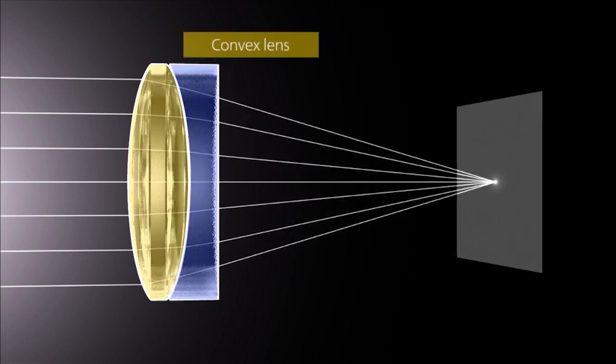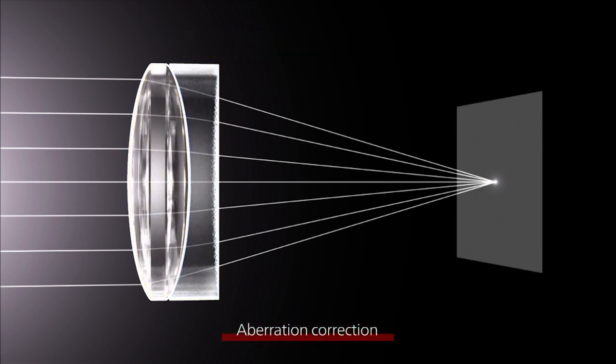Since the direction in which spherical aberration occurs in a convex lens is opposite to a concave lens, through a combination of two or more lenses, light rays can be made to converge to a single point. This is called aberration correction.